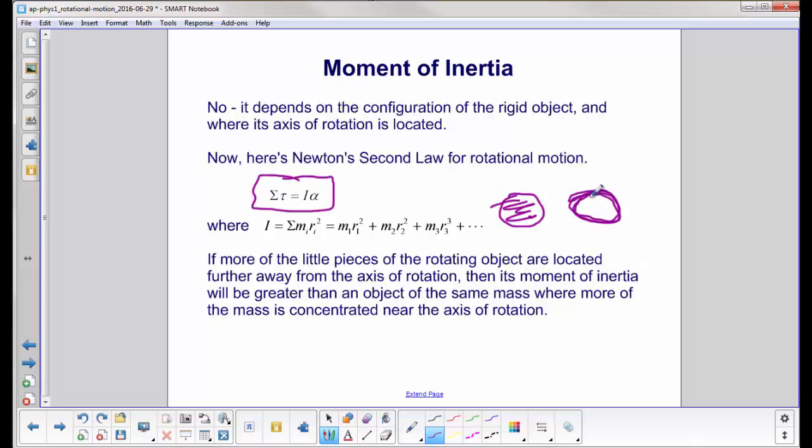In this case, more of the mass is further away from the center. There's no mass in the center here. This is a distance r. Over here, you've got some of the mass out at the side, but most of it's in the middle. So which would have the greater moment of inertia?